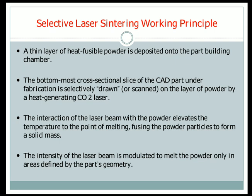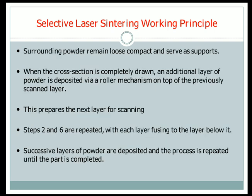The intensity of the laser beam is modulated to melt the powder only in the areas defined by the part's geometry. The intensity is controlled so that only in the specified required places the polymer powder melts, while adjacent polymer powders remain in powder form. The surrounding powder remains loose and compact, serving as support.